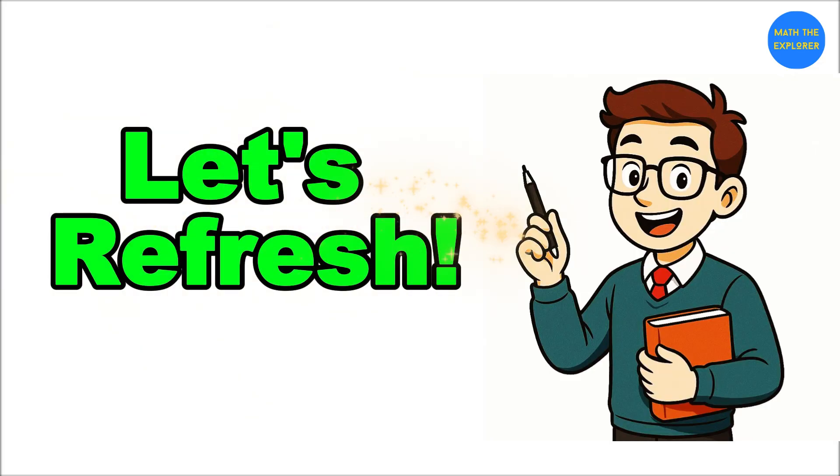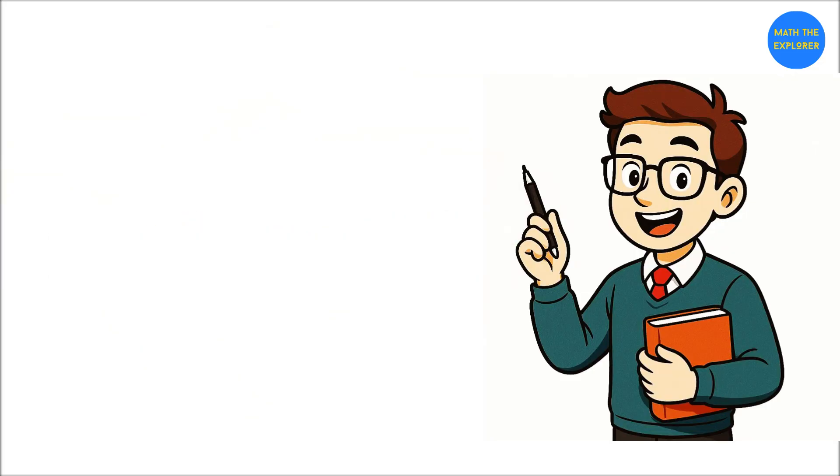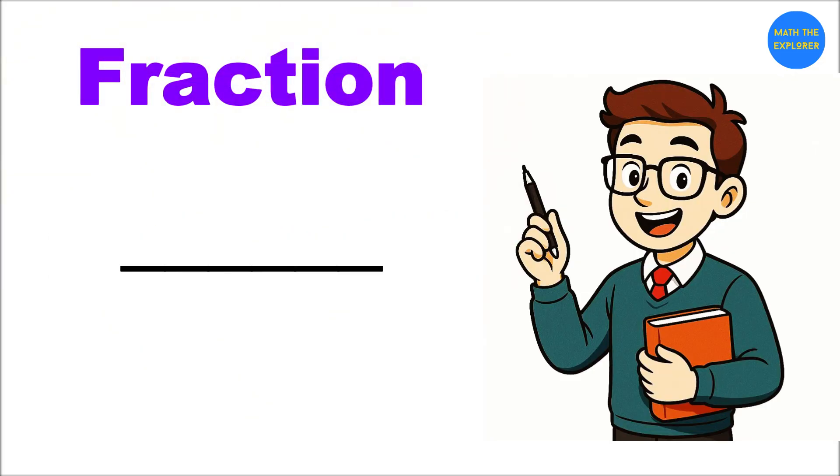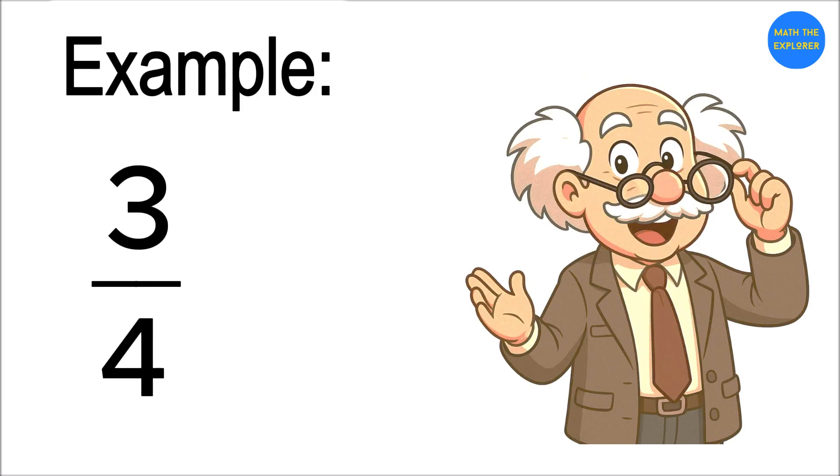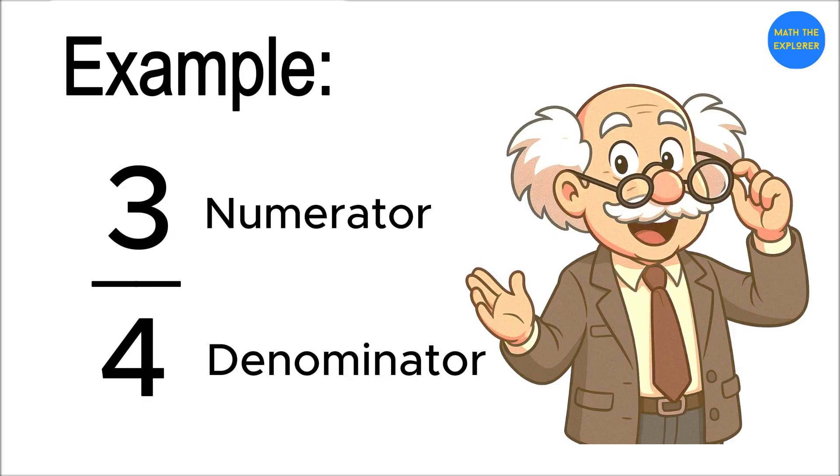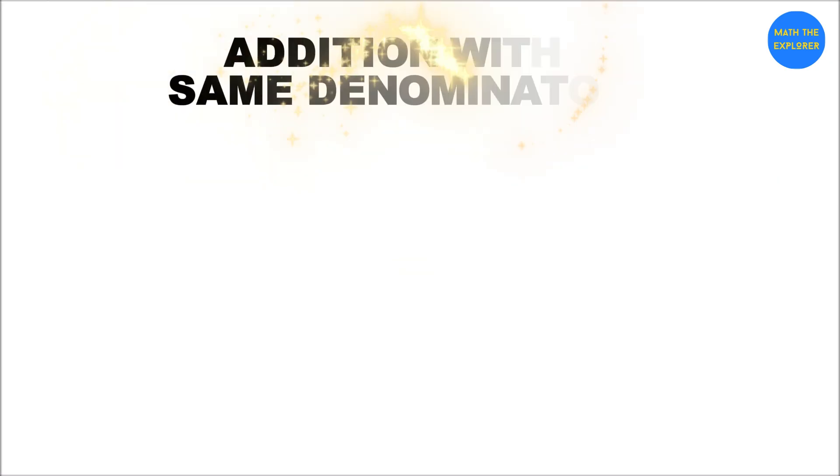First, let's refresh: a fraction has two parts - the numerator on top and the denominator at the bottom. Example: three-fourths. The numerator is 3 and the denominator is 4. Easy, right? Now let's get into operations: addition with same denominator.